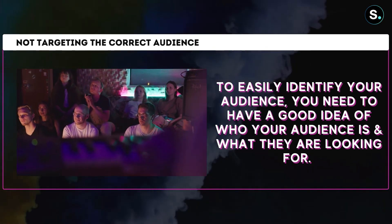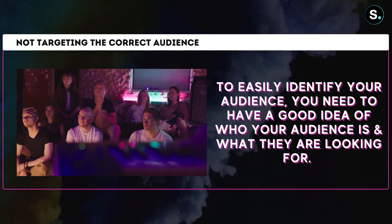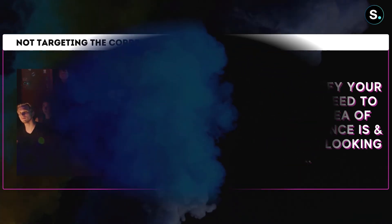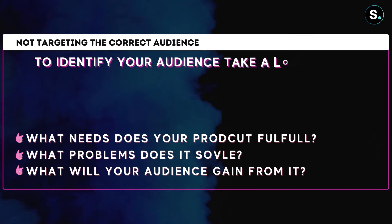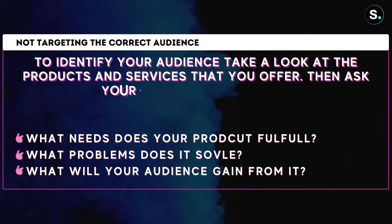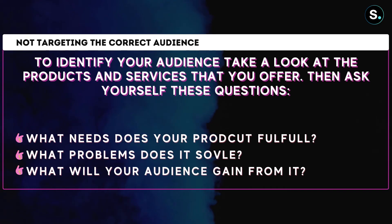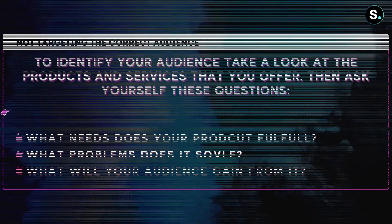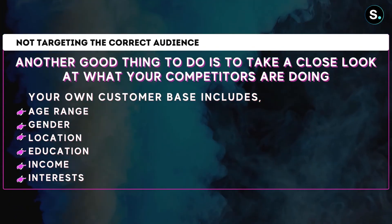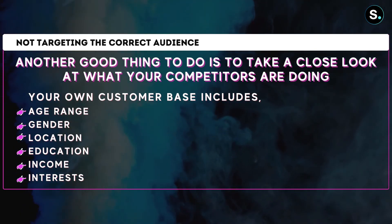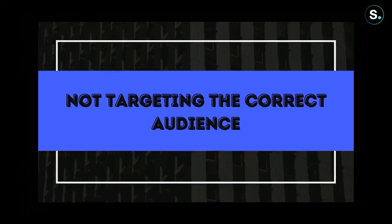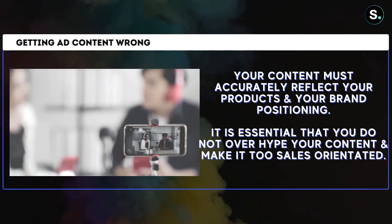Mistake number two: not targeting the correct audience. You can easily identify your target audience when using Instagram ads, but you need a good idea of who your audience is and what they're looking for. A lot of advertisers don't spend enough time on this and end up targeting the wrong audience. Ask yourself: what needs do your products or services fill? What problems do you solve? What kind of person would get the most out of your product? Also look at your competitors' customers and know your demographics — including age range, gender, location, education, income, and interests.